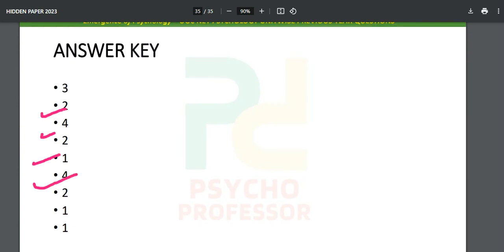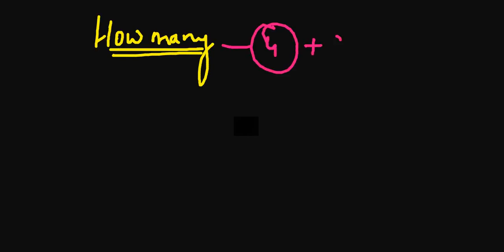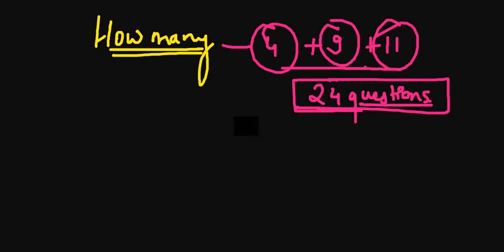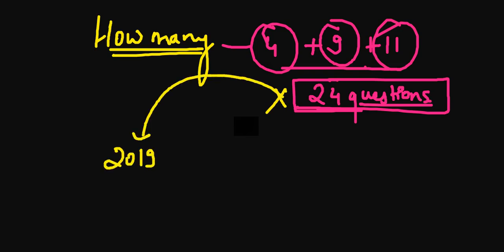After solving you get the answer key, find out where you were right or wrong, and identify where you need more practice. By watching just this short video, you've effectively prepared approximately 4 + 9 + 11 = 24 questions precisely. If a question repeats from these 24, you will not get it wrong.